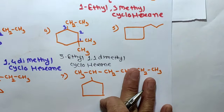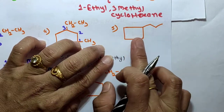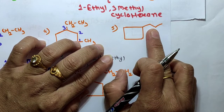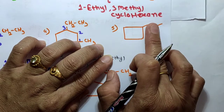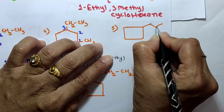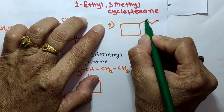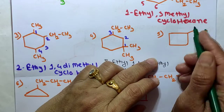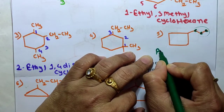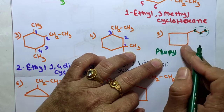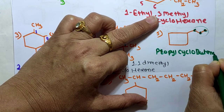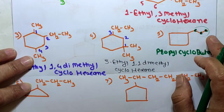When the ring contains more or equal number of carbon atoms than the alkyl group attached to it, it is named as a derivative of the cycloalkane and the alkyl group is treated as a substituent. Here the ring has 4 carbon atoms and the chain has 3 carbon atoms. Since the ring has more carbons, the 3-carbon chain is the substituent — that is a propyl group. So the name is propylcyclohexane.